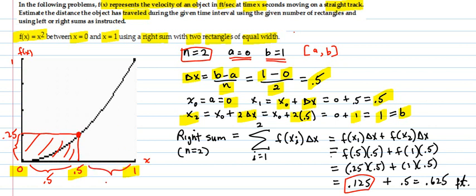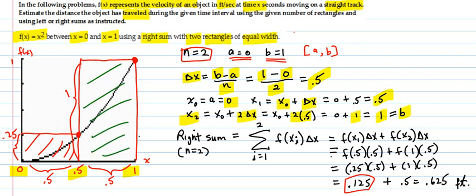On the second interval, which is also 0.5 wide, we're using the right endpoint velocity, which is way up here. And we're calculating the rate times time. And this here is your 1. This rectangle over here has an area of 0.5, representing the number of feet that you have traveled during that sub-interval.